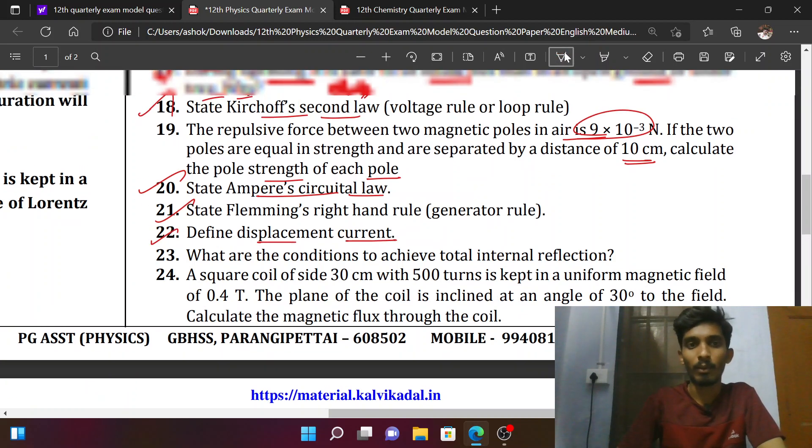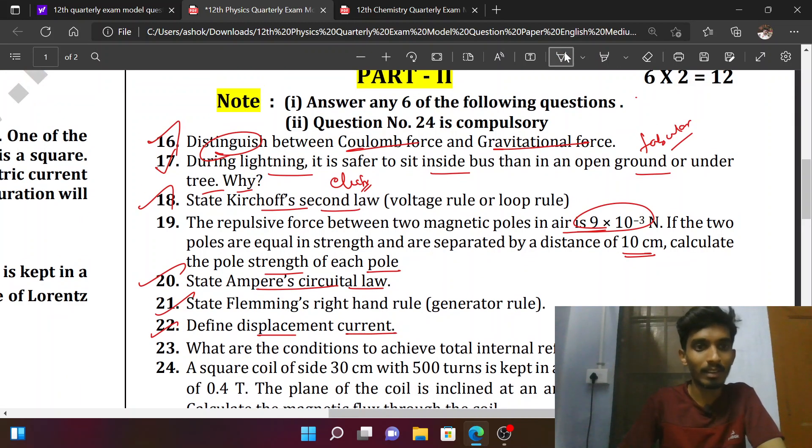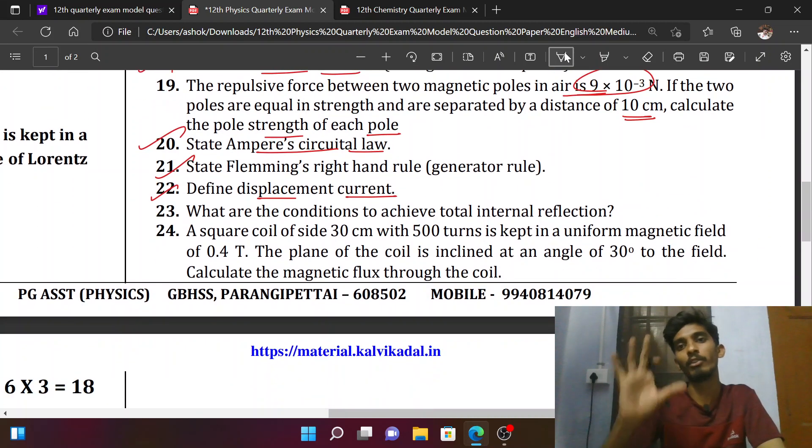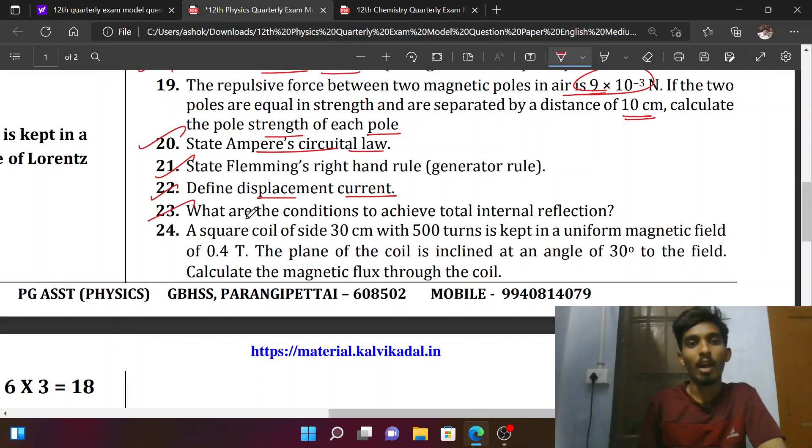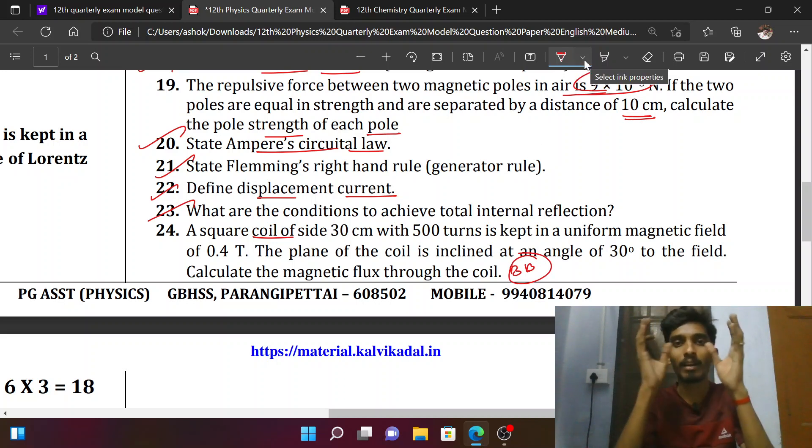Five questions: 16, 18, 20, 21, 22. What are the conditions to achieve total internal reflection? If you have a bookwork question, you'll have no question. If you have a problem, you'll have a bookwork problem. That is very important.